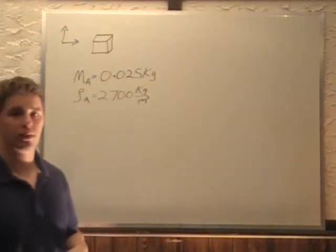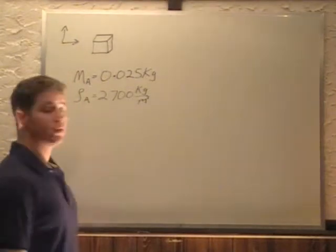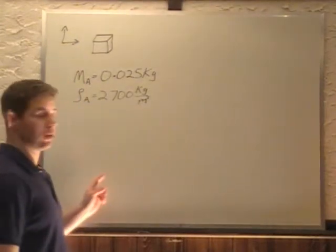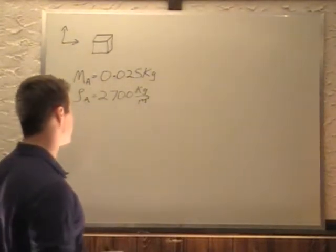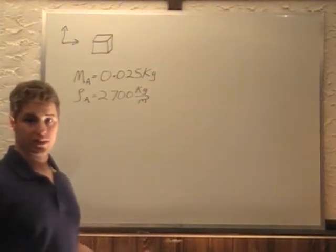In this problem, we have a block of aluminum. We're given the mass of the aluminum is 0.025 kilograms, and the density of the aluminum is 2,700 kilograms per meter cubed. We want to figure out what the volume of the aluminum is.